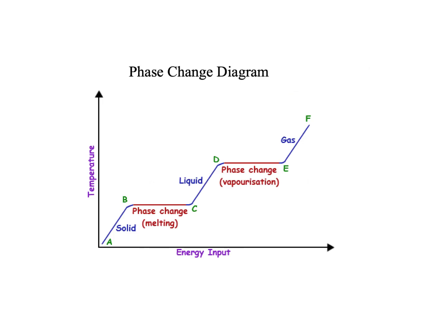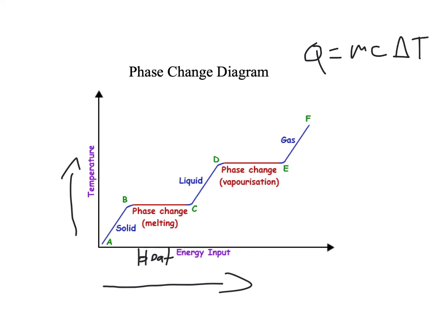We can put all this together in a phase change diagram. On this diagram, the x-axis is heat energy input — going right means more heat added — and the y-axis is temperature, with higher meaning higher temperature. As you add heat to a solid, the temperature increases according to Q = mcΔT, where c is the specific heat, m is the mass, and ΔT is the temperature change. Then you start to melt: melting is a process of breaking chemical bonds, so you're adding heat but that heat is no longer making temperature rise — it's breaking bonds. Eventually all the substance melts into a liquid.